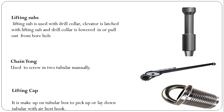Lifting cap. It is made up on the tubular box to pick up or lay down tubular with the air hose hook. So with this lifting cap we can lay down any tubular from the rig floor to the catwalk, or we can pick up any tubular from the catwalk to the rig floor.